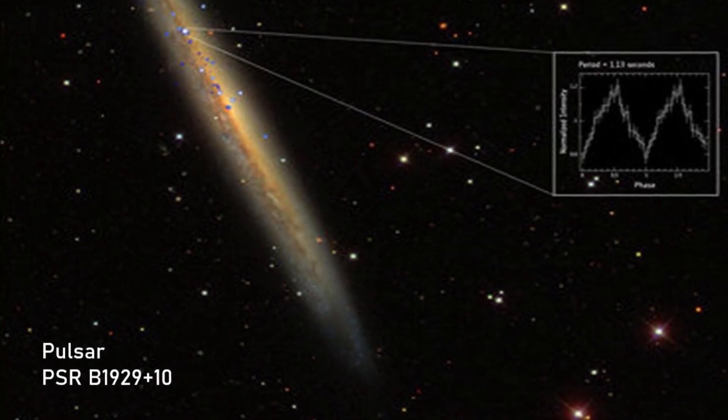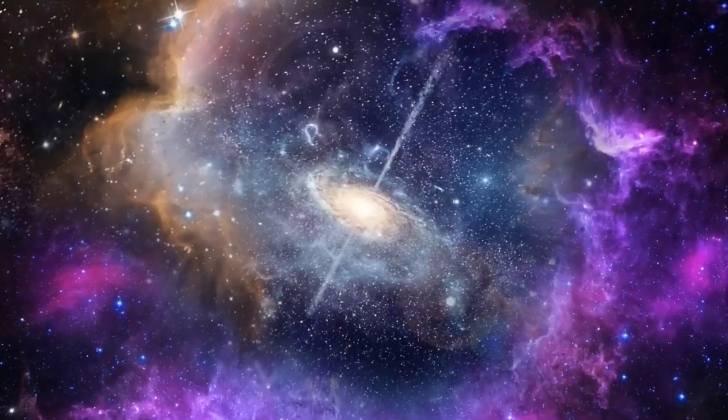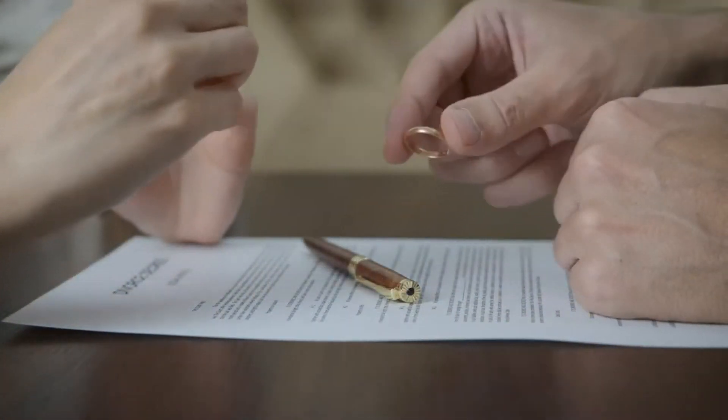Interestingly, the pulsar PSR B1929-10 does actually share a common galactic trajectory, so it's possible the two objects had a very explosive relationship in the past, but have now left each other in a strange kind of celestial divorce.